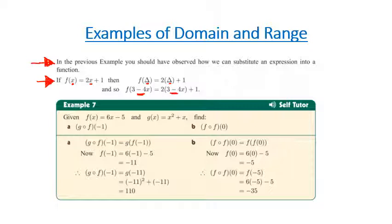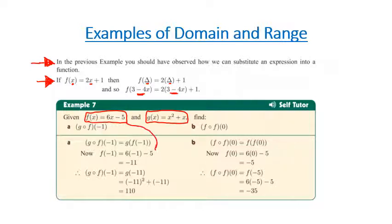In example 7, we've got f of x equals 6x take 5, and g of x equals x squared plus x, and we want to work out g of f of negative 1. Now if we're just going to substitute 6x take 5, which is our f function — we're trying to work out f of negative 1 first — we substitute: 6 times negative 1 take 5 gives negative 6 take 5, which equals negative 11.